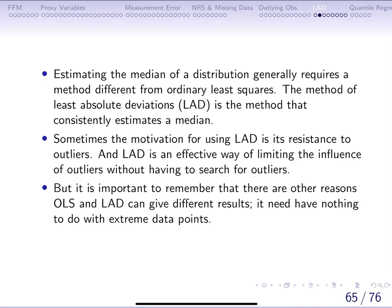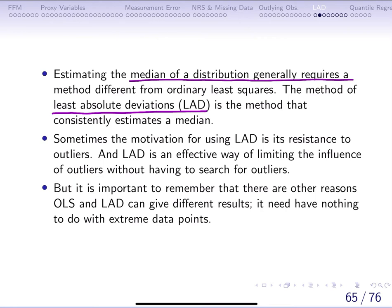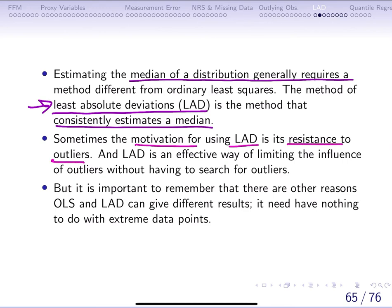Estimating the median of a distribution requires the method called least absolute deviations, which is different from OLS or ordinary least squares. LAD consistently estimates a median. The motivation for using LAD is that it is resistant to the influence of outlying observations. So if you want an effective way of limiting the influence of outliers, you can use LAD.